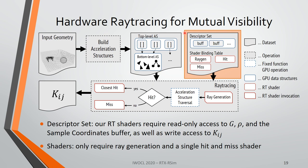The second important component is the set of descriptors and binding tables required to tell the GPU hardware what to do when a ray hits something, misses something, or how to generate rays. The descriptor set describes which buffers need to be accessed. For our ray tracing shaders, we require read-only access to geometry, surface properties, and sample coordinates, plus write access to K_ij. In terms of shaders, it's actually a very simple use case: we only require a single ray generation shader and a single hit-and-miss shader.